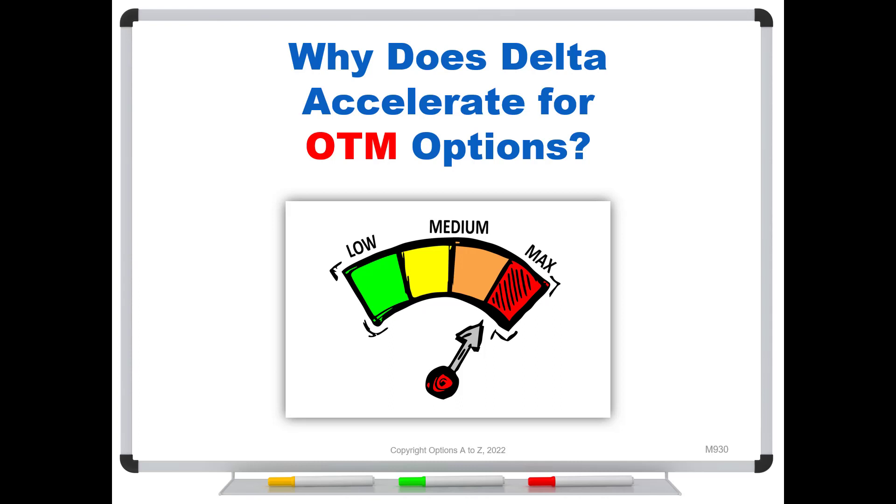So it's not saying that out-of-the-money options are bad. Like all options, they are tools, but you need to understand their characteristics. And this is an important one for every options trader to know. So let's go have a look. Why does the delta accelerate for your out-of-the-money options?